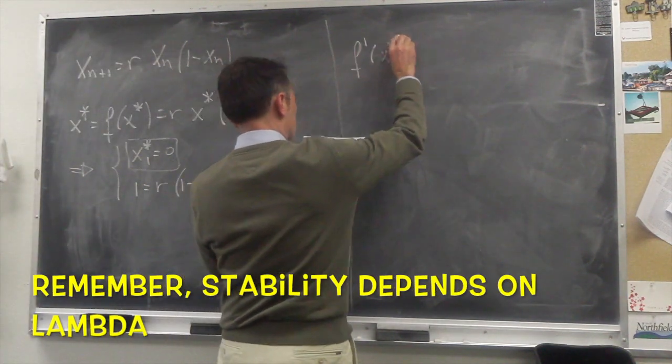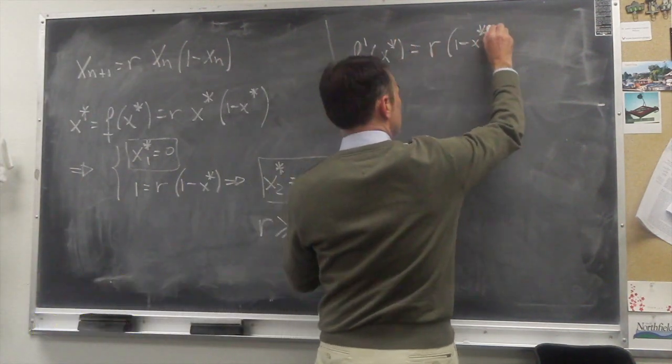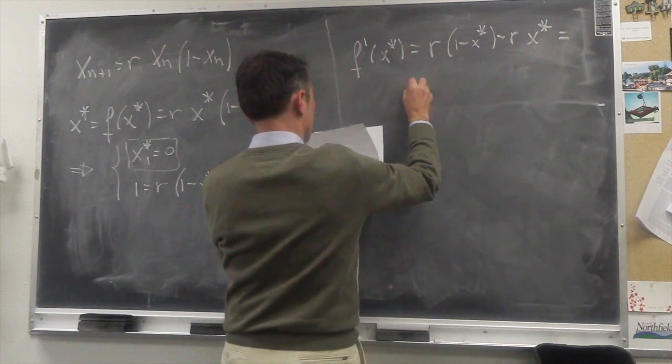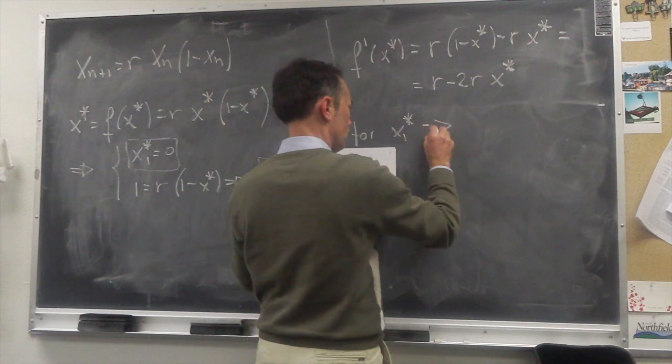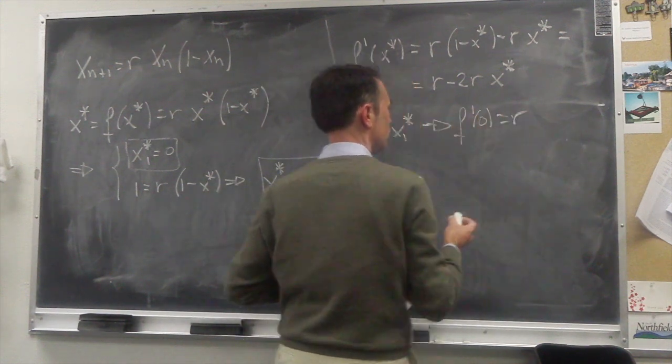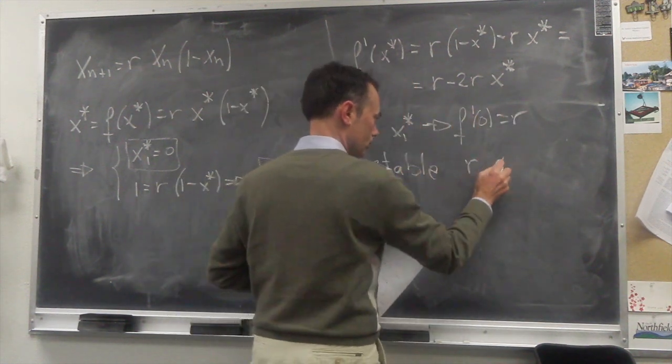Stability depends on lambda which is the derivative evaluated at x star. Substituting for the two fixed points we get for the first one that it is stable for r values smaller than 1. Remember that is when the population goes extinct.